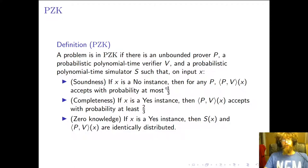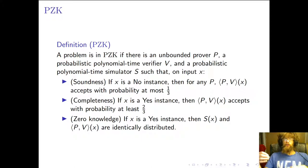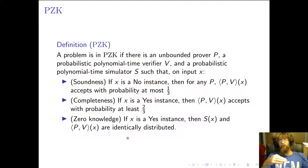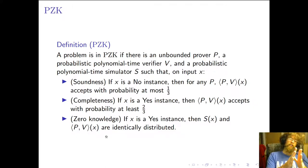It also has the zero knowledge condition: there's a simulator that can mimic the interaction between the prover and the verifier on yes instances. The idea is that the verifier can't learn much — the prover isn't telling the verifier any new information. It's perfect zero knowledge because we require this to exactly match the distribution, compared to SZK (statistical zero knowledge) where the simulator has to be really close but doesn't have to be exactly the same.